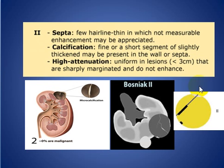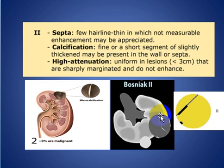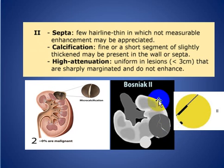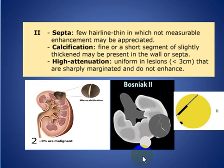Type 2: it has a few hairline thin septa, not measurable enhancement — may be appreciated as we see here. We can see a few hairline septa, less than 3 in number, and maybe a dot of calcification, slightly thickened. Sometimes we have hyperdense cysts that are less than 3 cm and sharply marginated.